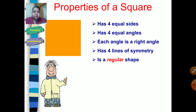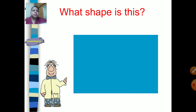A square has four equal sides, four equal angles — each angle is a right angle — and a square has four lines of symmetry. It is a regular shape, so a regular quadrilateral is a square and it has four lines of symmetry.